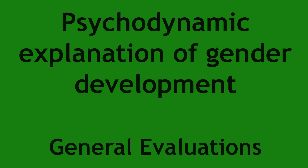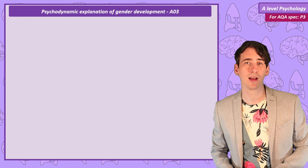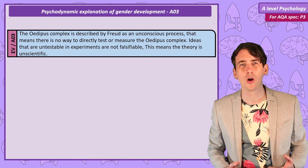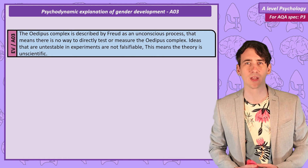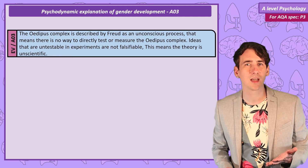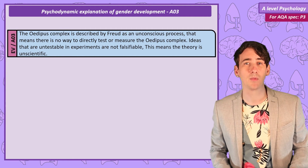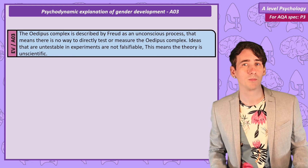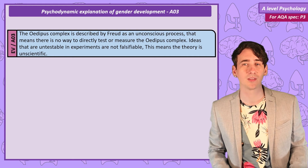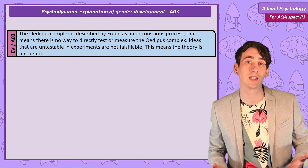General Evaluations. One problem Freudian theory is always going to have is that concepts like the Oedipus complex are unconscious processes — there's just no way to directly scientifically measure or test these ideas. That means they are not falsifiable; we can't show in an experiment that the Oedipus complex isn't real, so it's just not a scientific concept.